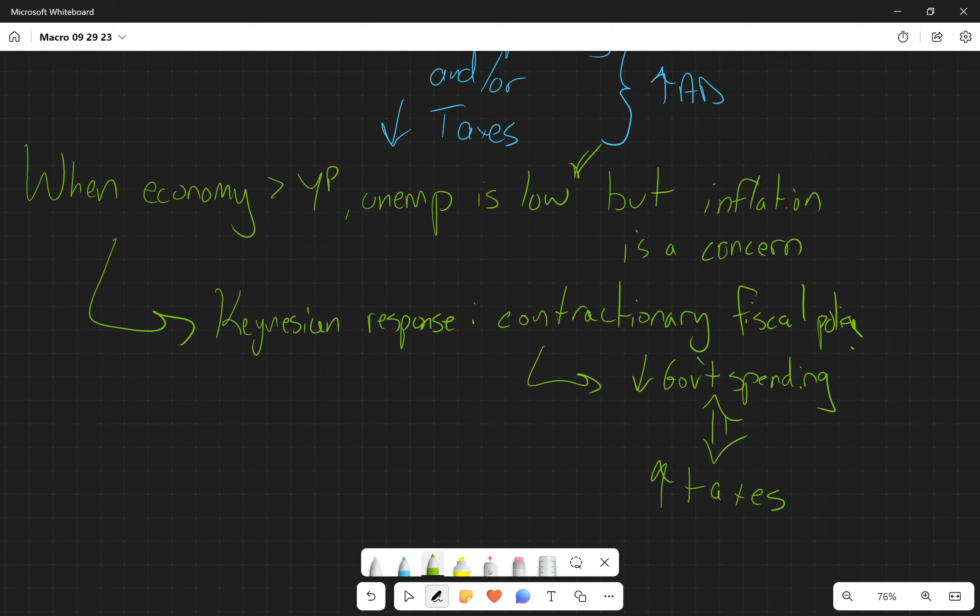we need to decrease aggregate demand by doing contractionary fiscal policy to decrease and reduce those inflationary pressures. The result of doing this would probably be very little reduction in output and a very little rise in unemployment but would have a significant impact on the price level. It would alleviate some of that pressure on the price level and possibly even have some downward pressure as a result.